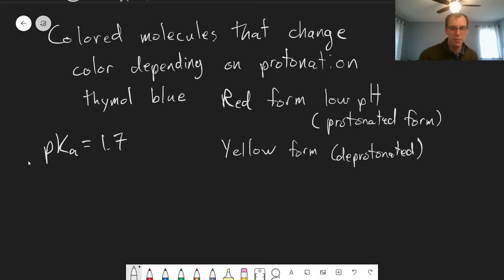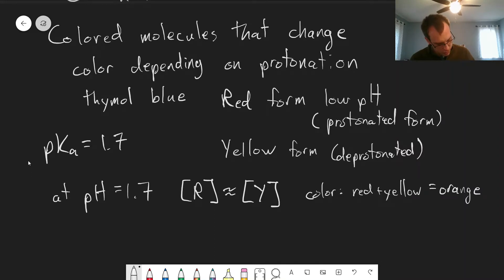And so we can use the Henderson-Hasselbalch equation to get an idea of what's going to happen in terms of how this changes with pH. So at pH equals 1.7, our concentration of the red form, the protonated form, is going to be roughly equal to the concentration of the yellow form. So in terms of the color, we'll have red plus yellow in equal amounts. This will look orange right at pH 1.7.